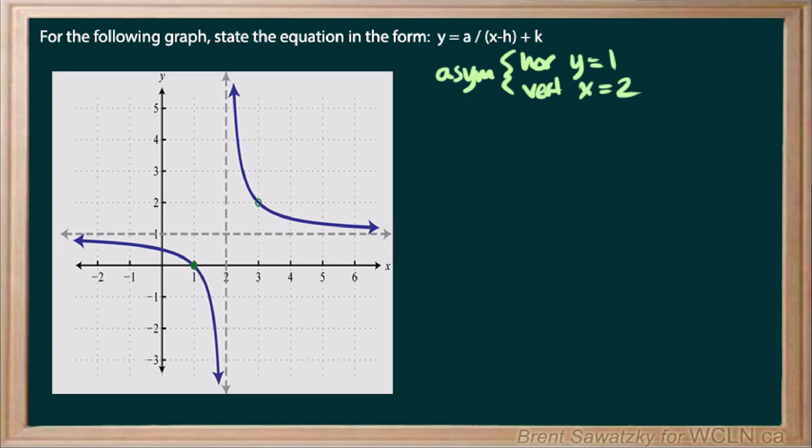All right, so asymptotes out of the way. And so now let's get our equation started. The form we're asked to work with is this. And given our asymptotes, we should be able to figure out the h and the k.